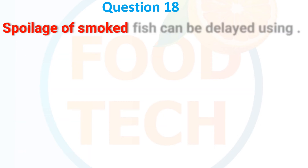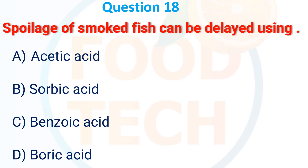Spoilage of smoked fish can be delayed using: A, acetic acid; B, sorbic acid; C, benzoic acid; D, boric acid. The answer is B, sorbic acid.